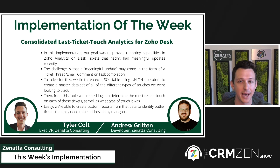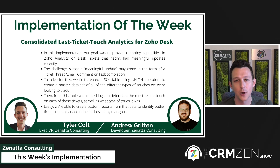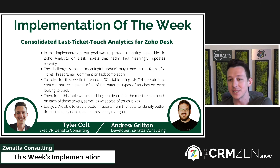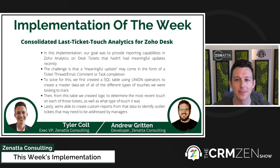Last but not least, we can use this new data set to create custom reports that look at tickets in certain outlier ranges. Maybe a ticket is open but there's been no touch in seven days, or it's open and there's been a comment but no email in the last 14 days. You can essentially start to create these different potential issue categories and surface them selectively through custom reports on top of the data.